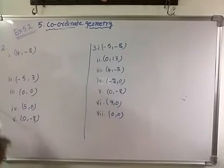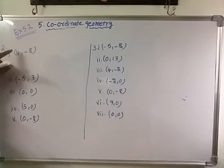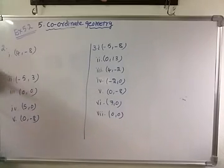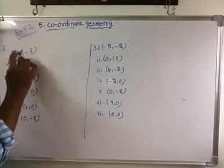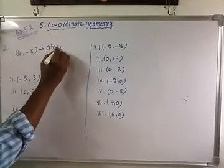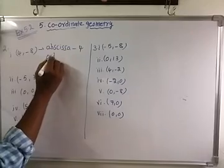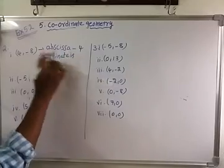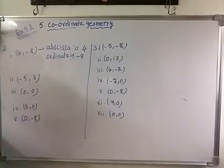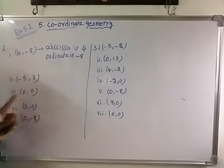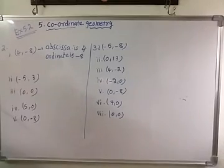Question 2: Write the abscissa and the ordinate of the following points. The abscissa is the first coordinate, that is the x coordinate. The ordinate is the second coordinate, that is the y coordinate. For the point (4,-8) in Q4: abscissa is 4, ordinate is -8. For the point (0,-8): abscissa is 0, ordinate is -8. Now you will write the remaining ones.